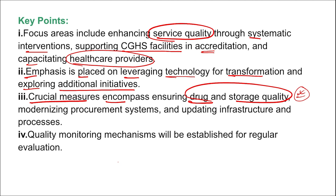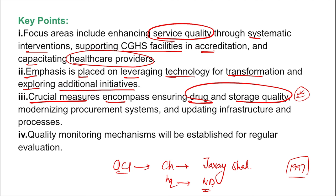Regarding QCI — Quality Council of India — the Chairperson is Jaxmi Shah. The headquarters is in New Delhi. It was established in 1997. The parent ministry of QCI is DPIIT — the Department for Promotion of Industry and Internal Trade — which comes under the Ministry of Commerce and Internal Trade.